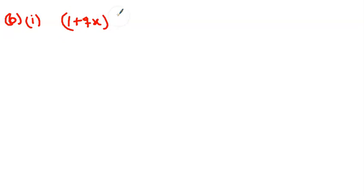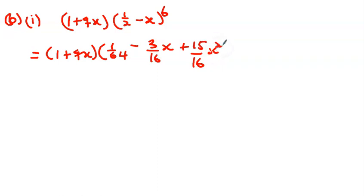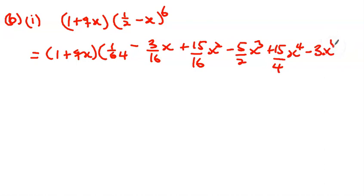Now for part (b), we have to find the product of (1 + qx) times the expansion of (1/2 - x)^6. This is the same as (1 + qx) times: 1/64 minus 3/16 x plus 15/16 x squared minus 5/2 x cubed plus 15/4 x to the power 4 minus 3x to the power 5 plus x to the power 6. We are looking for the coefficient of x squared.